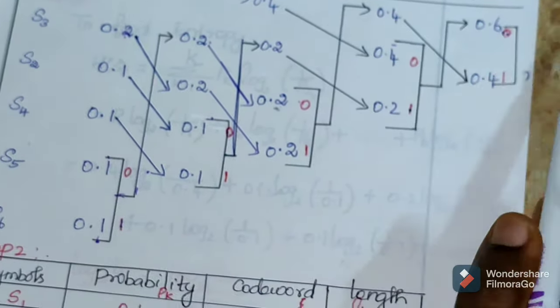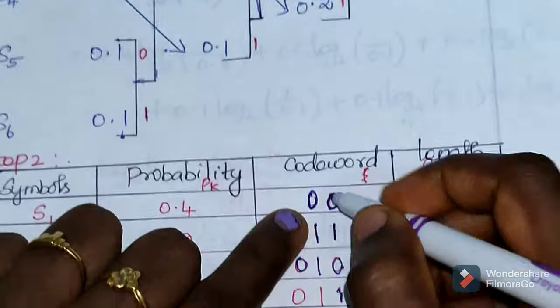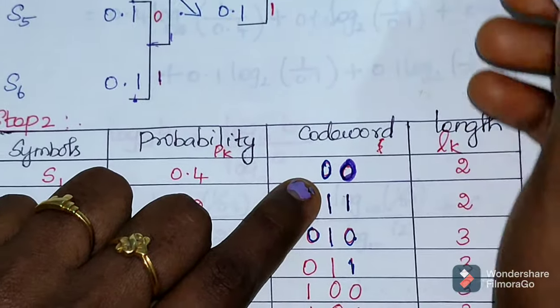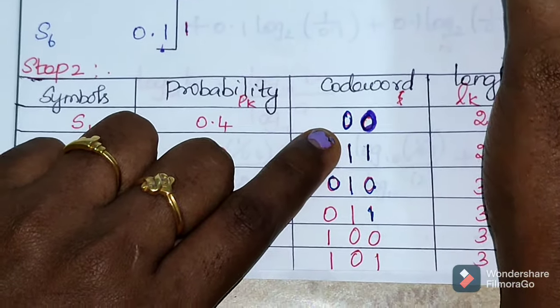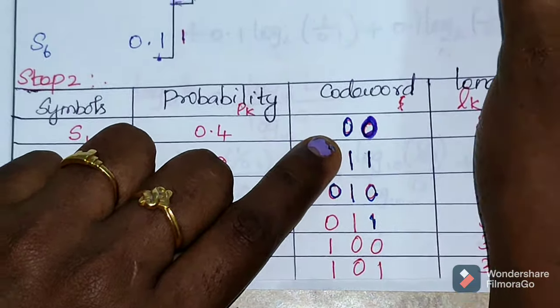Again the last two probabilities, codeword is assigned. You repeat the procedure. The total probability value is 1 when you add them all. Then find the codeword. So we have the symbols and probabilities.